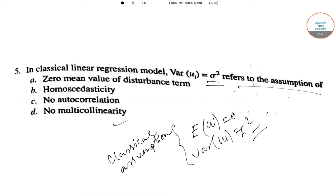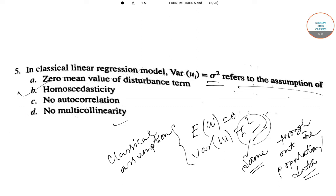Now this assumption says that the variance is same throughout the population or data. So when the variance is not changing we say it is homoscedastic. So option b is the correct answer.